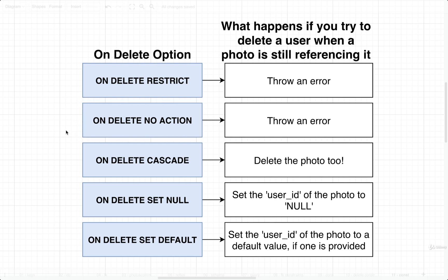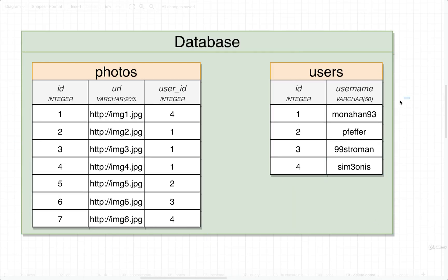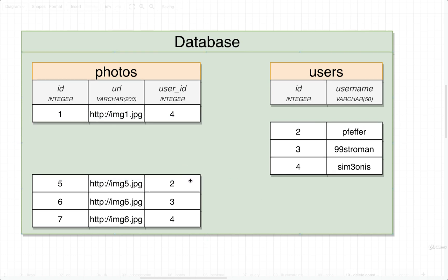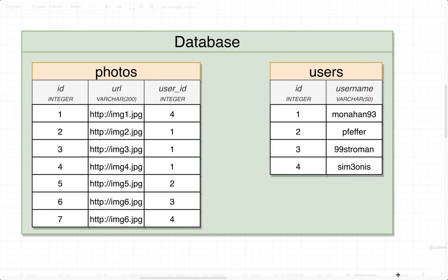Some of the other things we can do is something called a cascade delete. If we do ON DELETE CASCADE, that means whenever we delete a user, we are also going to delete all the photos that reference it. Our database would go into the photos table, find all the photos referencing the user with ID 1, and delete those photos as well. ON DELETE CASCADE is frequently a really good option if we want to delete a user and all the data associated with them.